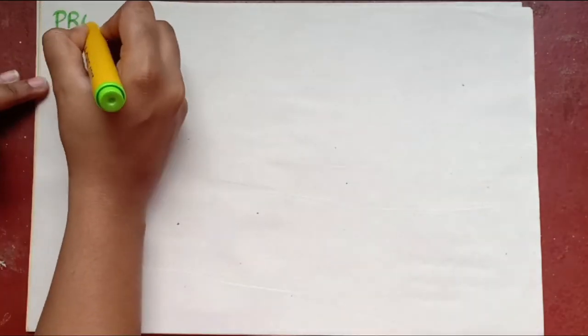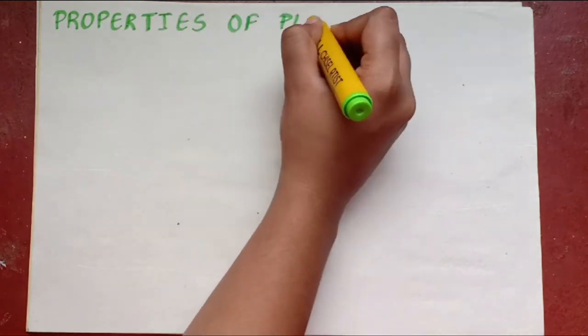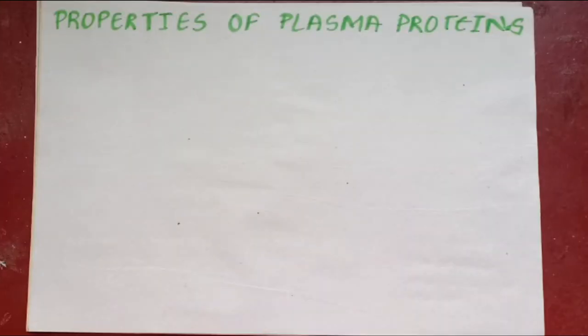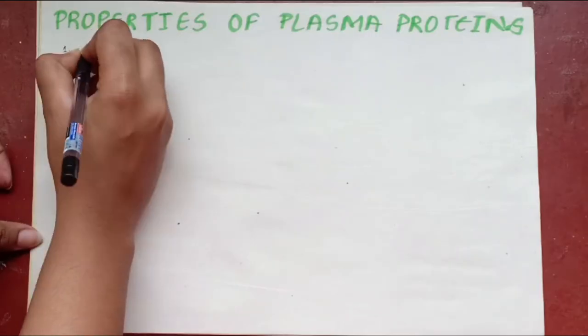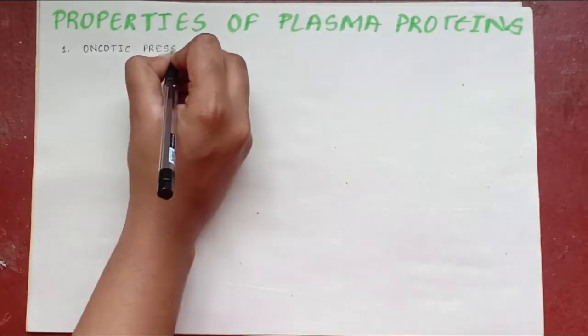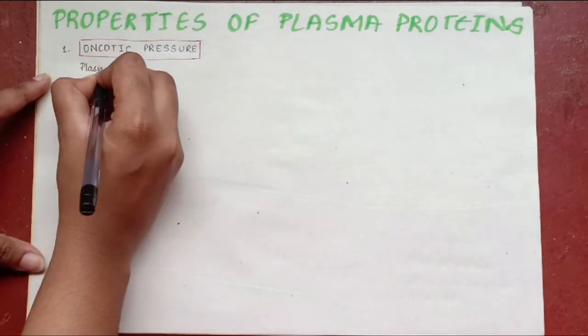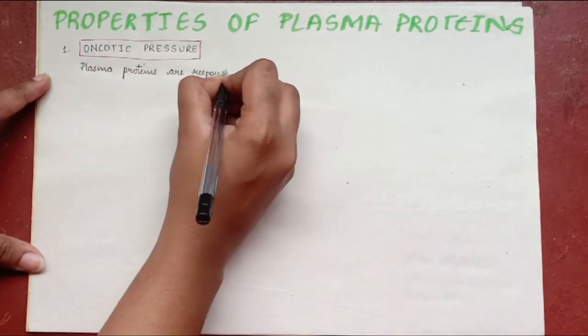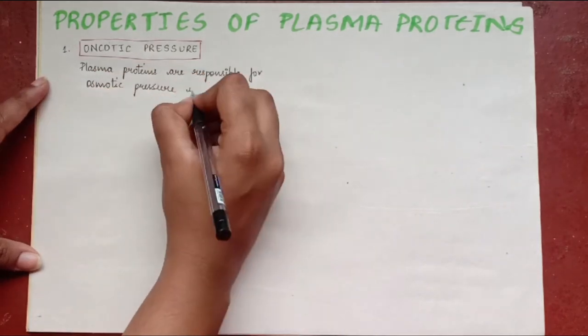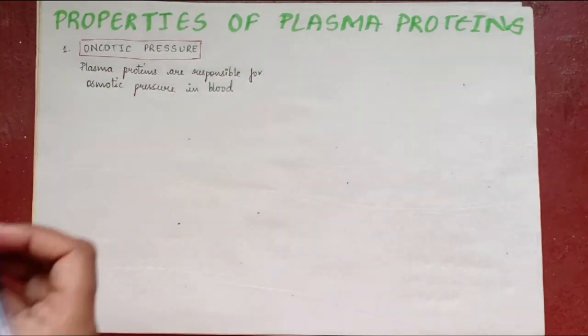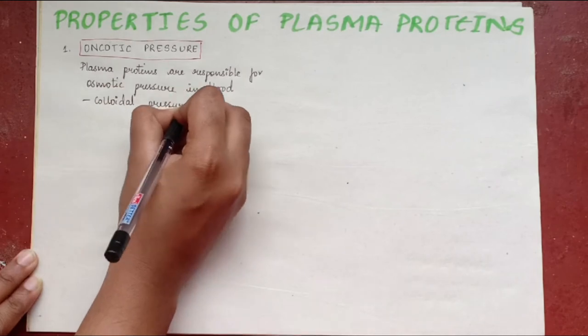Now, the properties of plasma protein. Oncotic pressure. The plasma proteins are responsible for the oncotic or the osmotic pressure in the blood. The osmotic pressure exerted by these proteins in the plasma is called colloidal osmotic pressure, which is 25 mm of Hg.